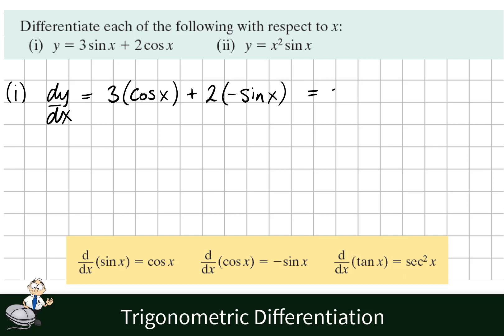Notice the angle never changes when we differentiate trigonometric functions. So just tidying this up, we get 3 cos x minus 2 sin x.